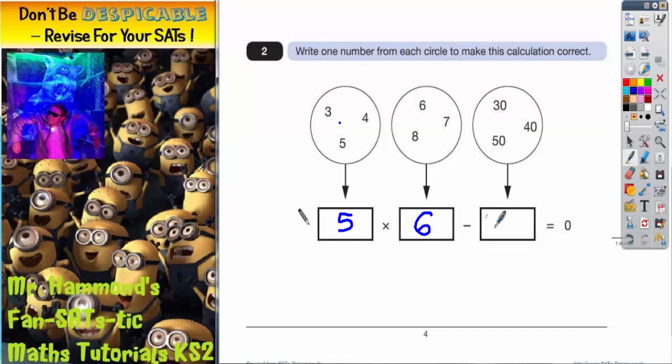But when I subtract my 30 from this circle, then that will leave me with zero. So, five multiplied by six is 30. Subtract 30 is zero.